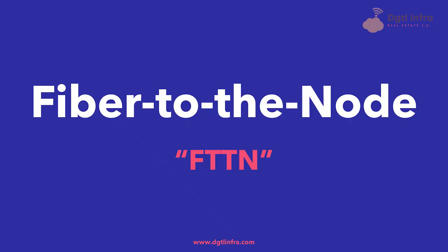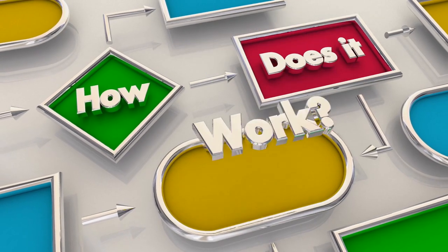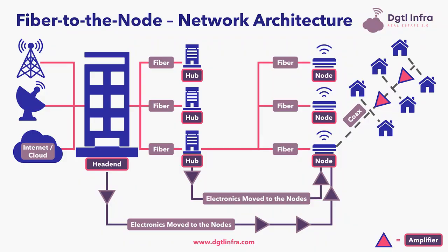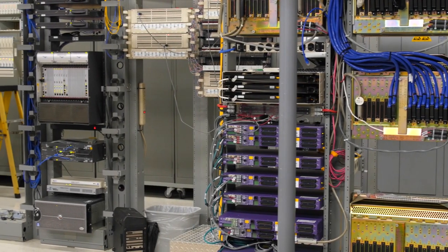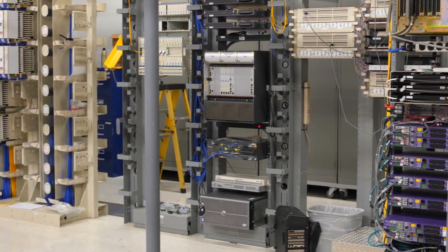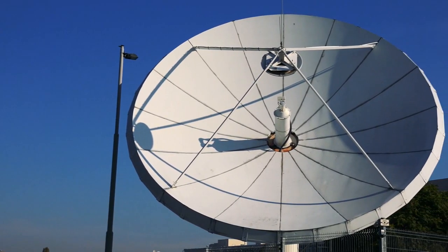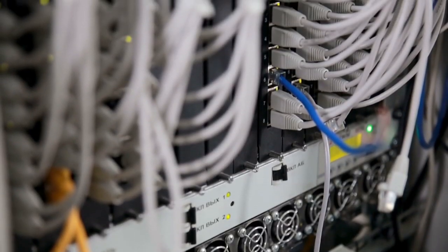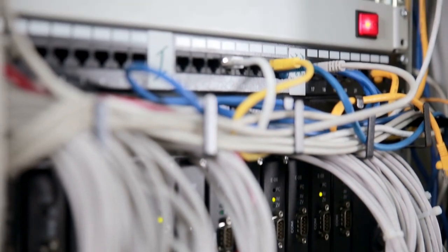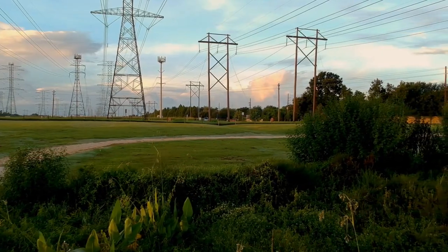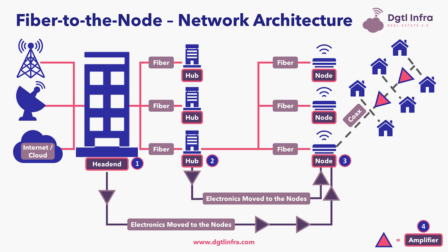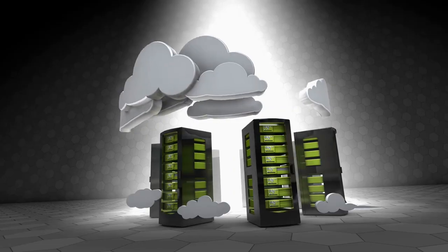Let's walk through some of the key components of fiber-to-the-node network architecture. FTTN networks have four key components. First is the head-end: a permanent, secure facility housing the electronics to provide cable services in a given market. The head-end represents the aggregation point for broadcast video, satellite transmission, and the internet in a particular market. It is ideally located near an internet exchange point, known as an IXP, and also a power grid. Networks are pushing electronics to the hubs and nodes, freeing up space at the head-end and becoming cloud-ready.